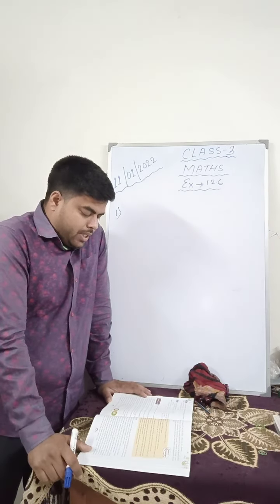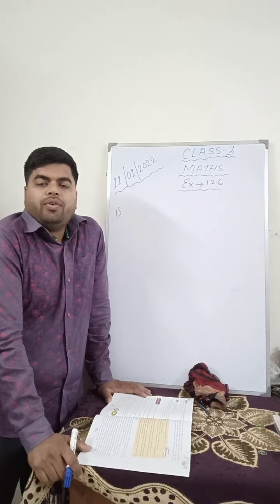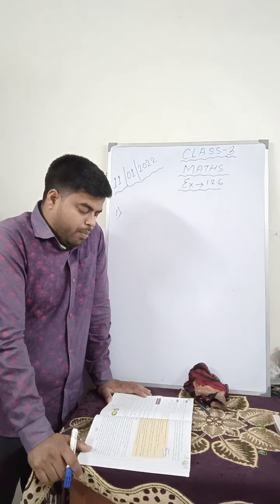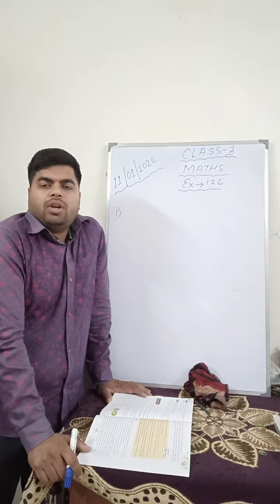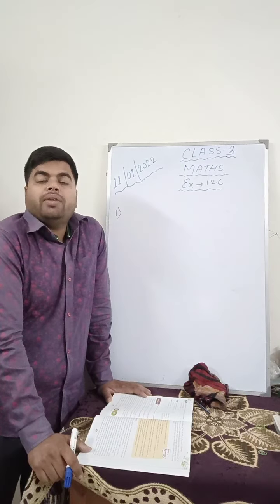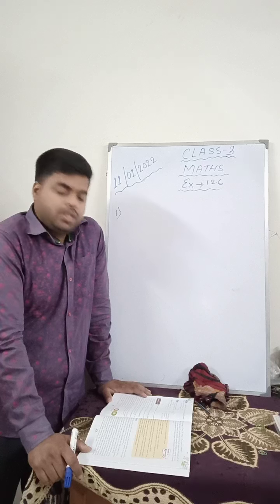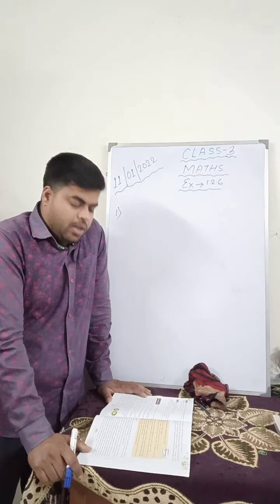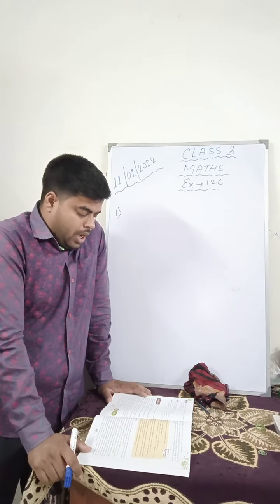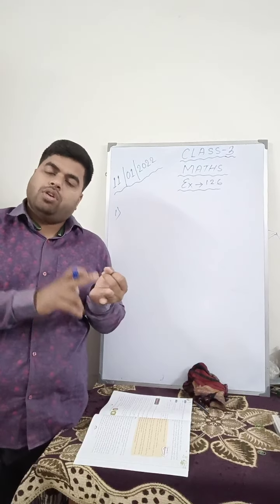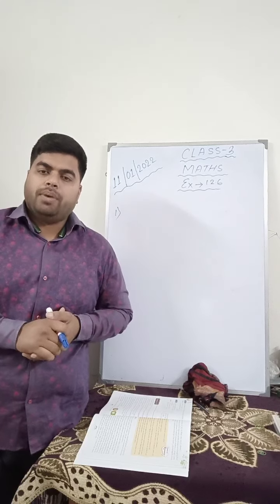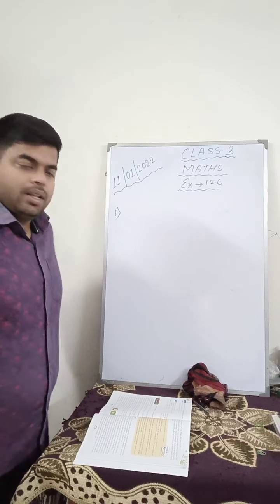Question number 1: Mannat purchased a bat for Rs. 94.50 and a ball for Rs. 25.50 from a toy shop. So Mannat is a person who has bought a bat as well as a ball. The cost of the bat is Rs. 94.50 and the cost of the ball is Rs. 25.50 from a toy shop. So, how much money did she spend? She has bought a bat and she has also bought a ball. What is the total amount she has spent to buy the bat and the ball?